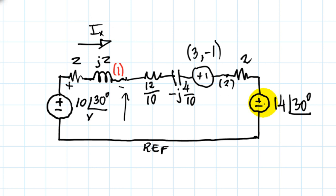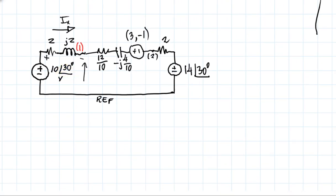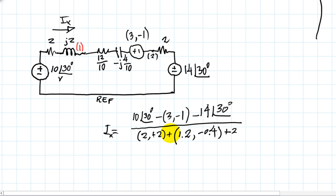That Ix is this source minus this one, minus this one, divided by the sum of 2 plus J2, 1.2 negative J 0.4, and 2 Ohms. That is the current. Multiply that times 2 plus J2 and subtract that from 10 with 30 degrees. There. That is your current.